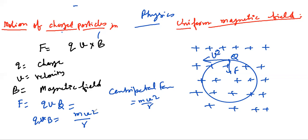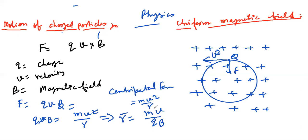VB cancels, and finally we get R is equal to MV divided by QB. This will be the radius — it means your particle will be doing circular motion.